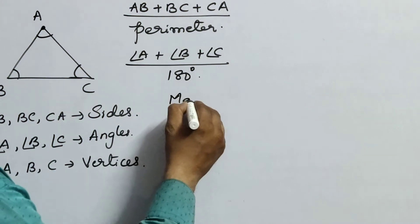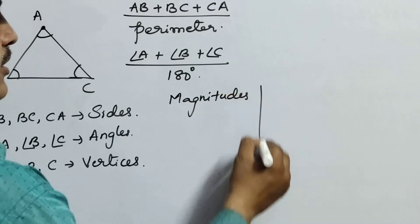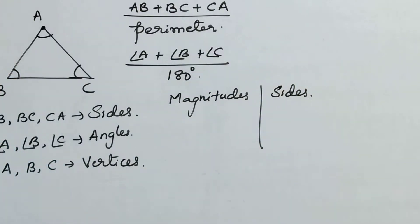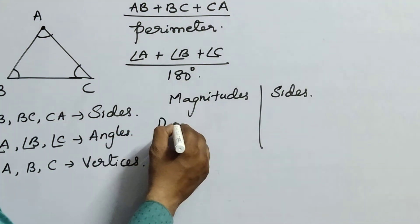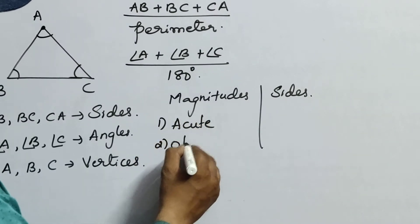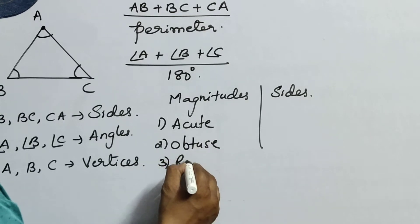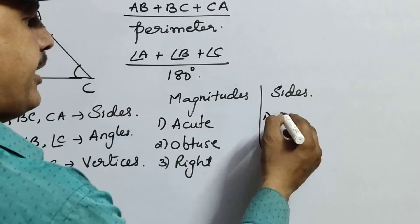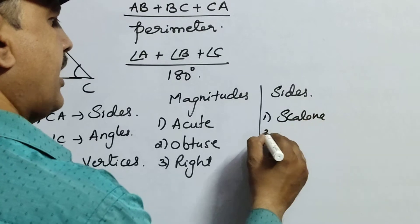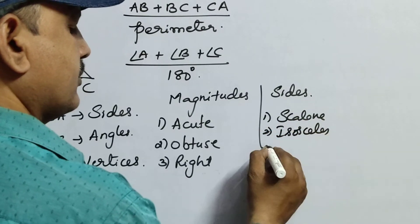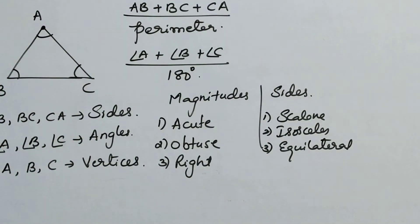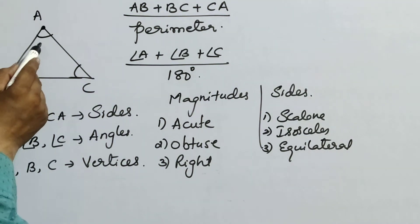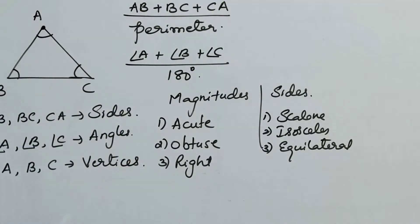The six types of triangles are completely based on magnitudes and sides. Magnitudes means: acute angle, obtuse angle, right angle triangle. And coming to sides: scalene, isosceles, and equilateral triangle. They may ask you a question: the sum of all three angles of a triangle is 180 degrees. When it is an equilateral triangle, each angle measures 60 degrees.